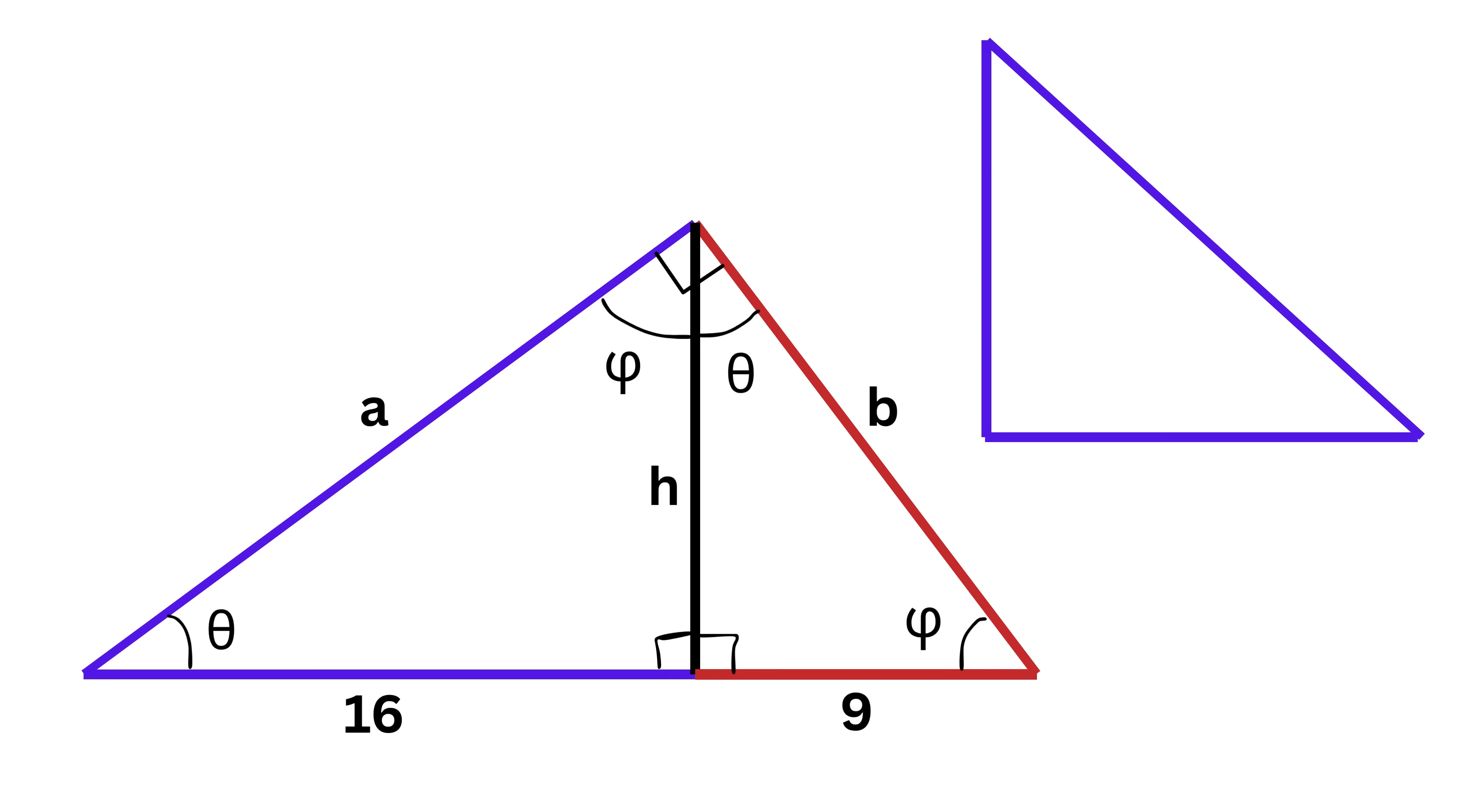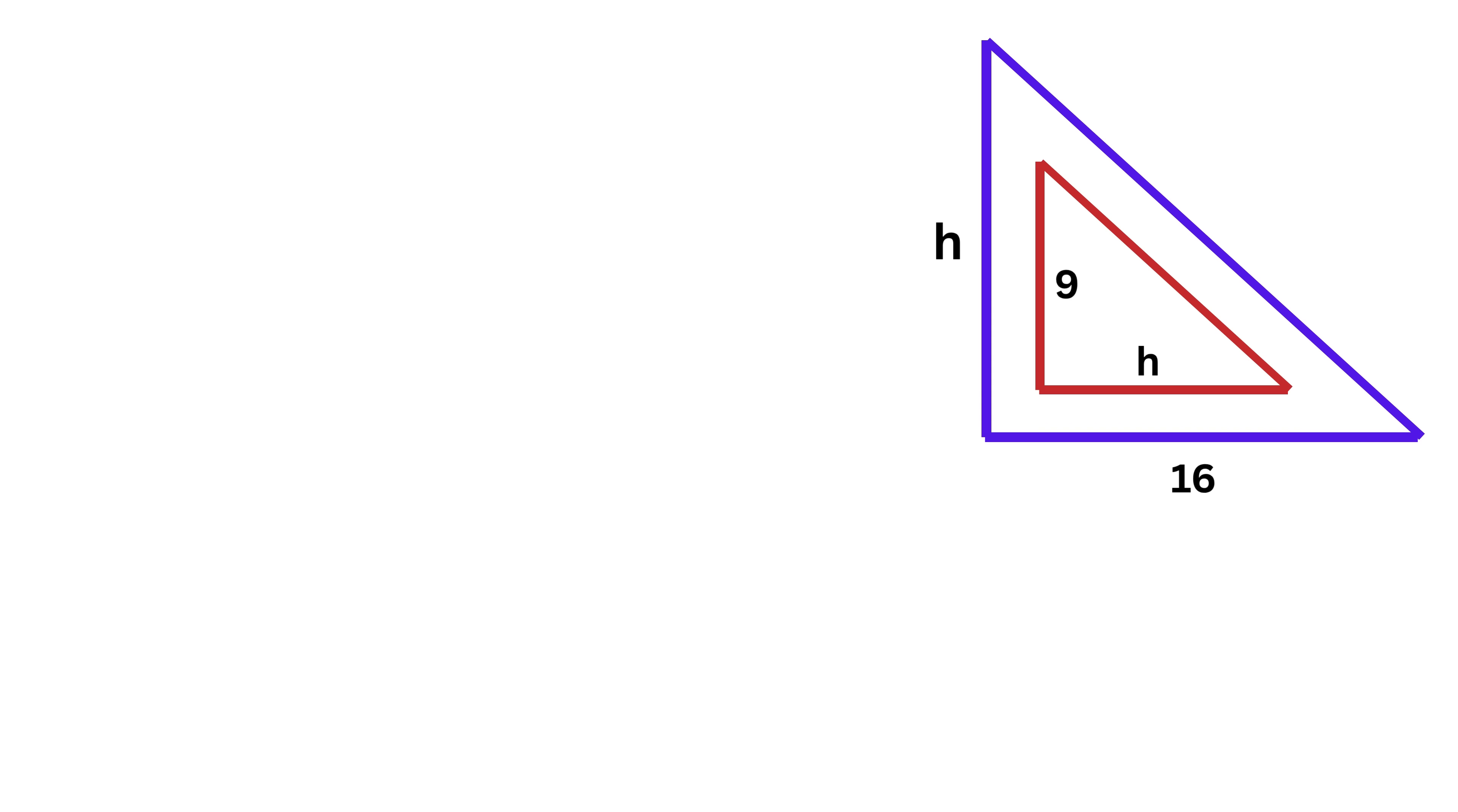So if we arrange the left triangle like this with sides 16 and H placed like this, then the sides corresponding to the same on the right side will be H and 9 placed like this. Now, from similarity, we know that in similar triangles, the ratio of corresponding sides is equal. So we get H divided by 9 equals 16 divided by H, right?